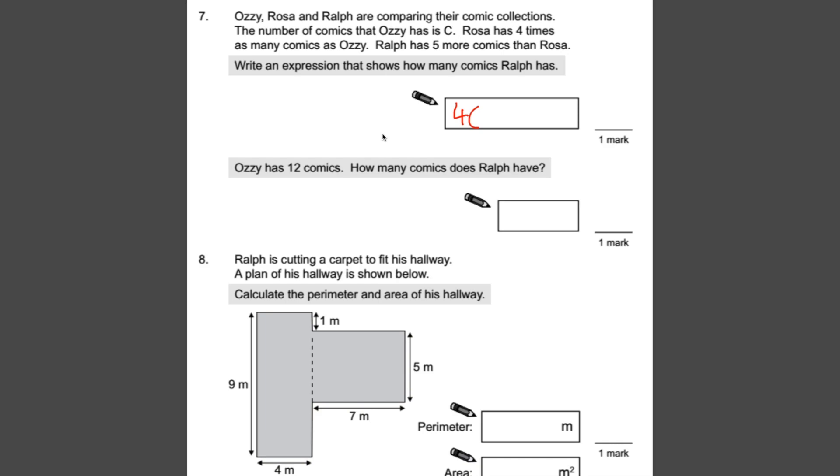Ralph has five more comics than Rosa. So he has five more than Rosa's got, which is four C. So all Ralph's got is four C, which is how much Rosa has got, plus five more. So that's the expression. Four C plus five.